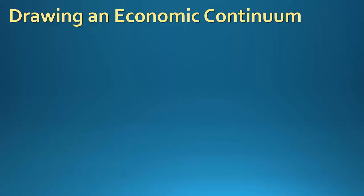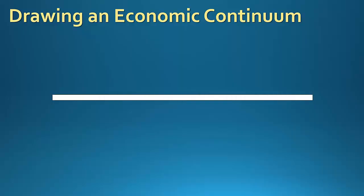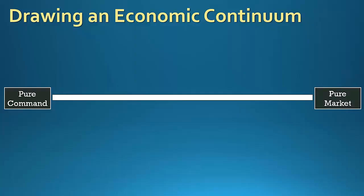Let's go ahead and set up our continuum line. Step one is to draw a horizontal line on the page. In step two, we need to add a couple of labels. Over here on the far left, we label that 'pure command,' and on the far right, we label that 'pure market.' Step three is optional, but I always like to add the number 100 to the pure market end and a zero to the pure command end. I also like to add a little tick mark in the middle so I'll remember where the midpoint is.